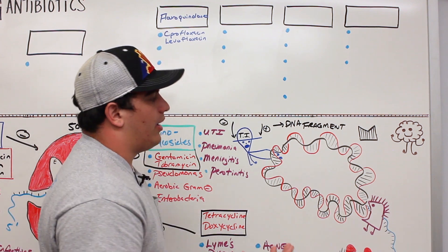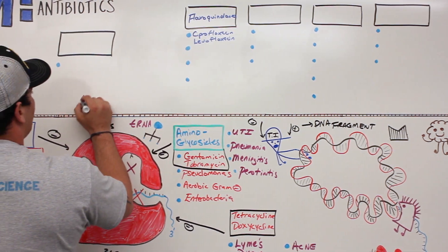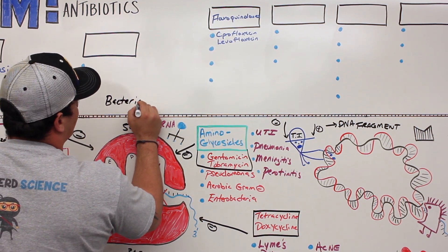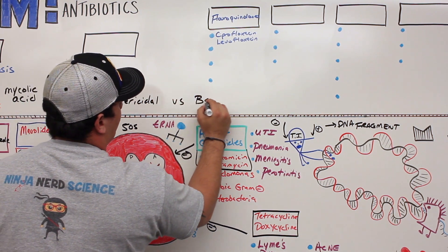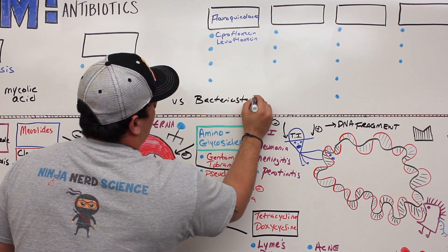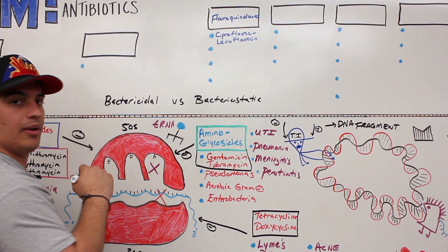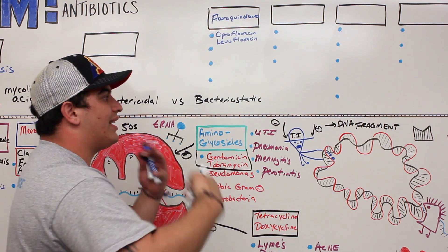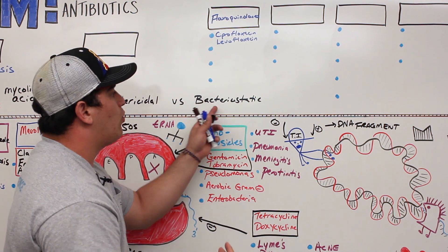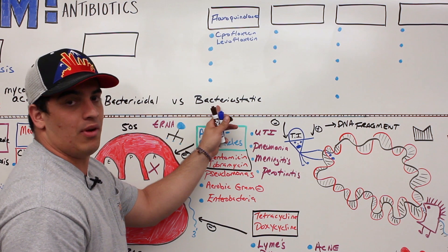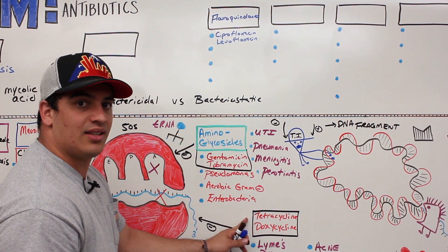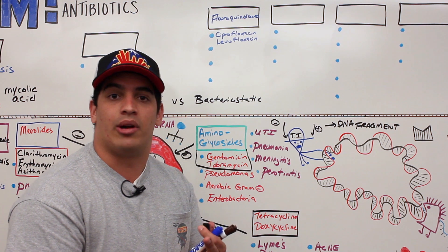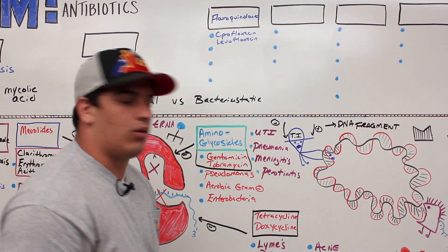There are two different ways that antibiotics are used. One is bactericidal, which kills bacteria. The other is bacteriostatic, which prevents the bacteria from reproducing — they're not trying to kill the bacteria, just preventing it from reproducing. Some bacteriostatic antibiotics we've already talked about include tetracyclines and doxycyclines, macrolides, and the folic acid pathway drugs like sulfamethoxazole and trimethoprim — those are bacteriostatic.